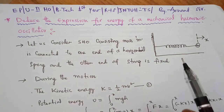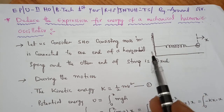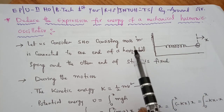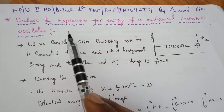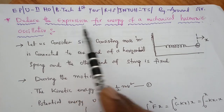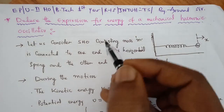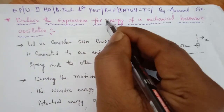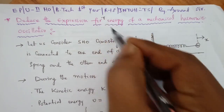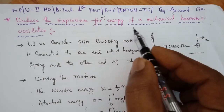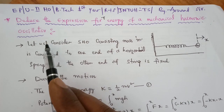Hello students, welcome to my class. Now I am going to explain the expression for energy. This is the total energy of a mechanical harmonic oscillator.